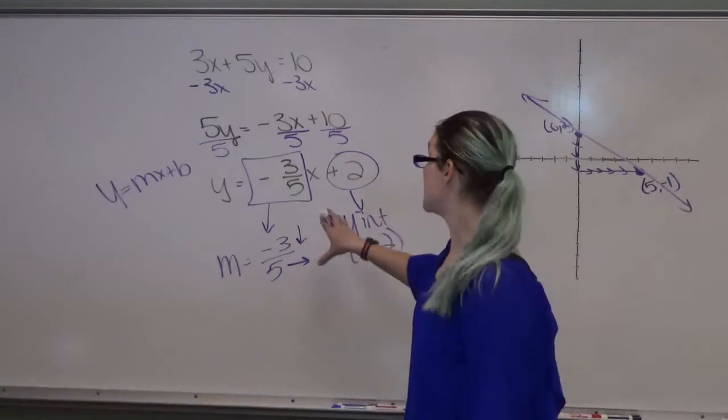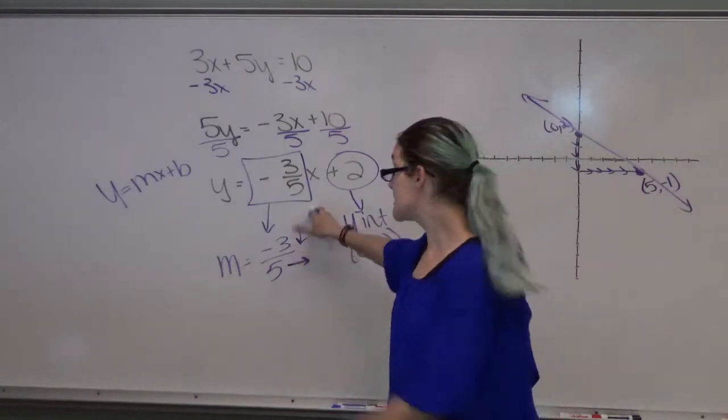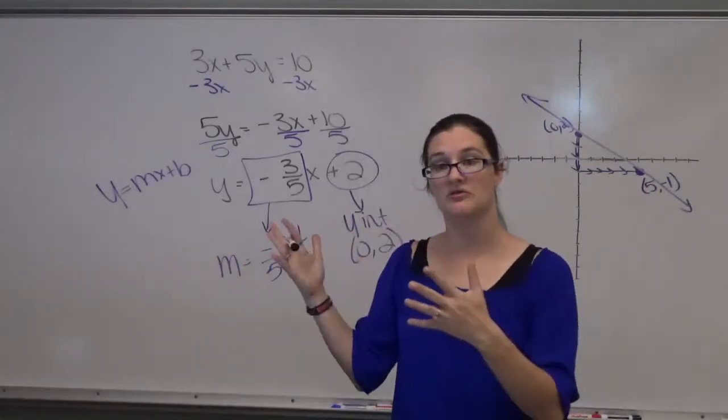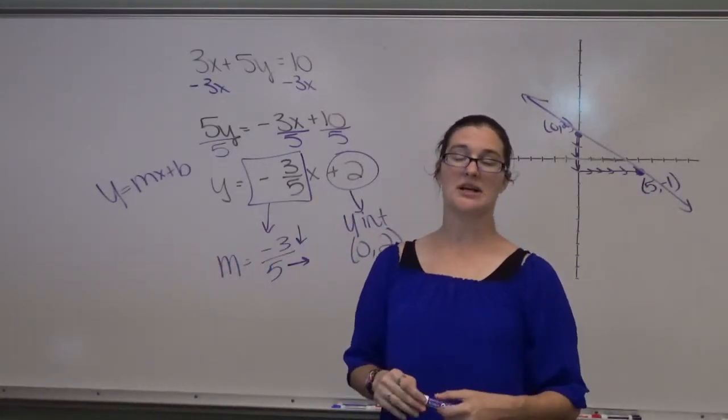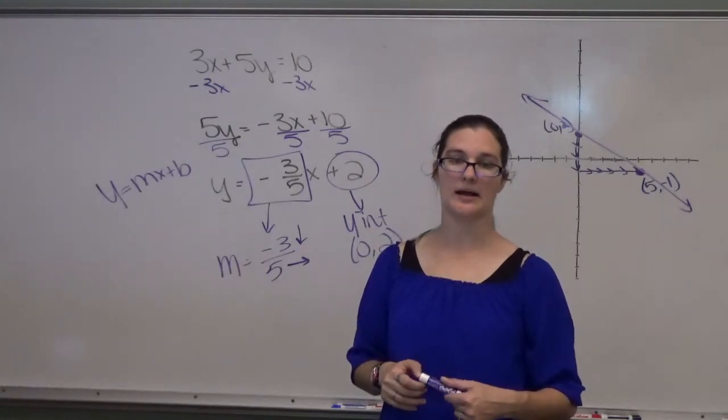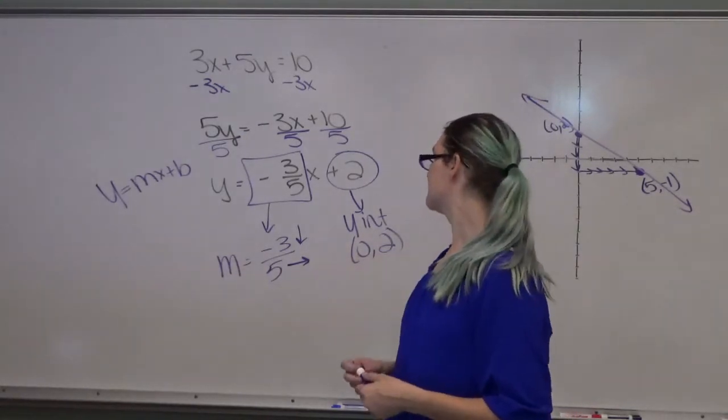But we do need to make sure we know rise over run. If it's positive, go up. If it's negative, go down. Always run the right way. Always run to the right. If you ever see me running, you better run with me because something's chasing me. We always want to make sure we're going the right way. Run right.